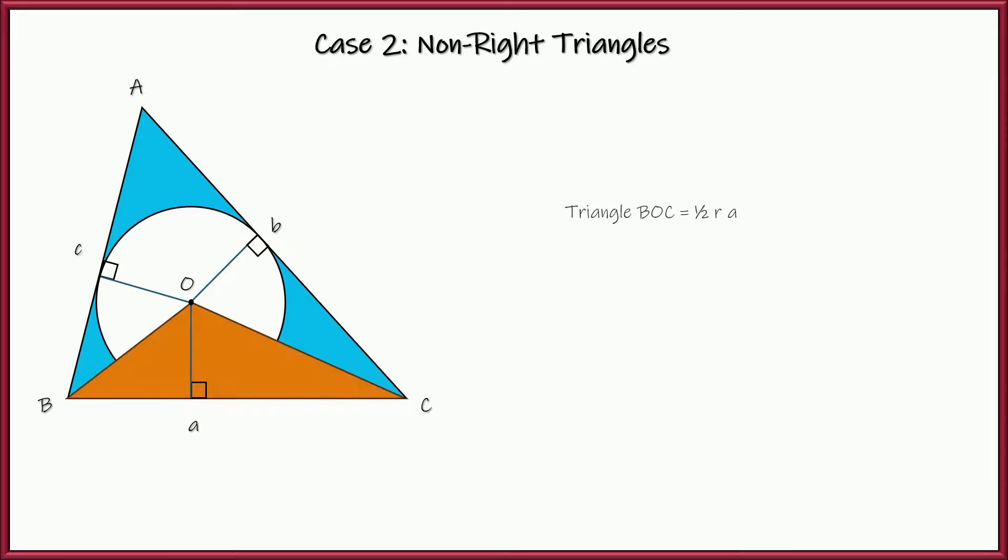So check this out. See this triangle right here? Triangle BOC? Well, I know its area would be one-half base times height. So that's one-half of the height, which is R, times the base, which is side A. So triangle BOC, its area is one-half R times A. Let's do the same thing with two other triangles right here. So I've got triangle BOA, which is once again one-half base times height.